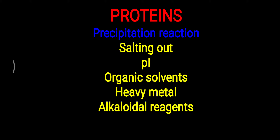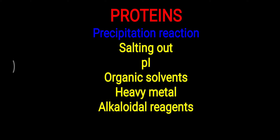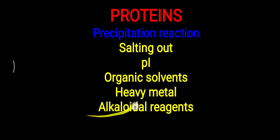Today's topic is about precipitation reactions of proteins. There are different reactions which can precipitate protein, such as salting out, isoelectric point, organic solvents, heavy metals, and alkaloidal reagents. We will look at how each particular method is useful for the precipitation of protein.